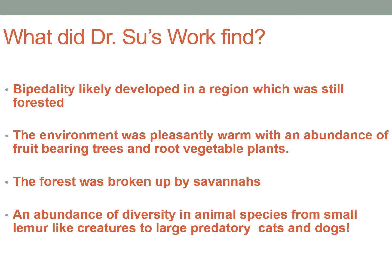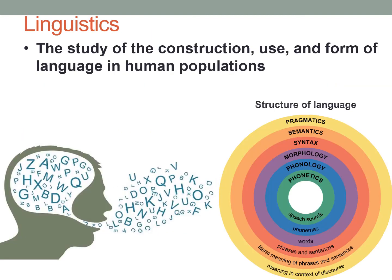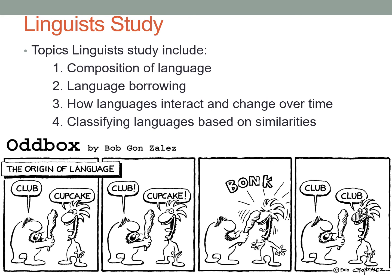There must be some other explanation for why humans began walking on two legs. Our next subfield is linguistics — the study of the construction, use, and form of language in human populations. Linguists may study things like decomposition of language, language borrowing — how languages borrow words from one another — how languages interact and change over time, and classifying languages based on similarity.